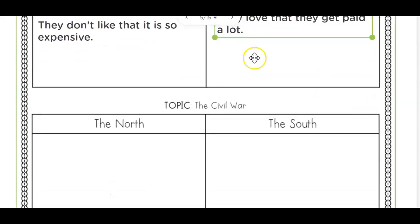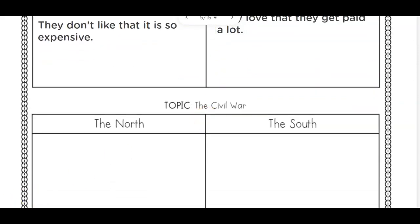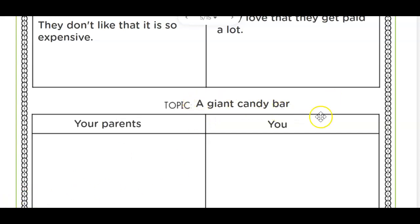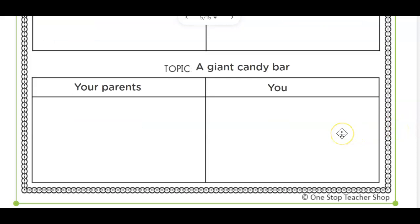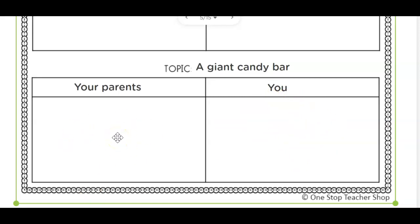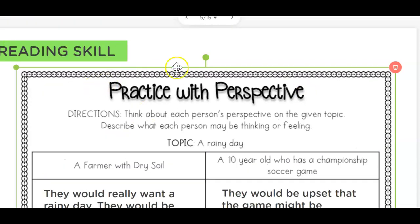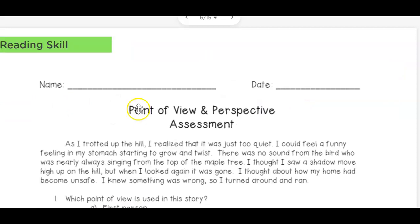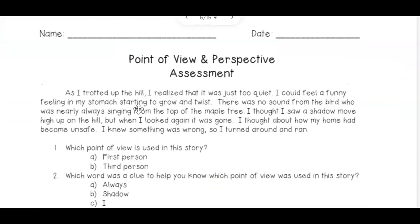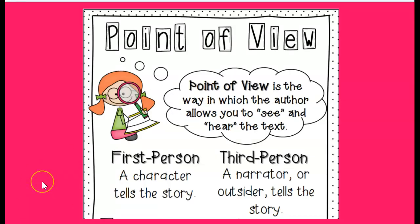Now we're going to change this bottom one because I want you to answer it on your own. The topic is a giant candy bar. How would your perspective be different than your parents' perspective? Remember, each person has different perspectives, so what would yours be that is different than your parents'? Go ahead and fill that out, and we'll continue looking at perspectives in our following page on point of view and perspectives. Pause the video now, finish that assignment, and watch the next video.